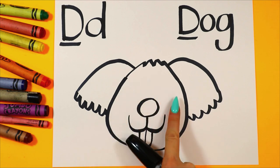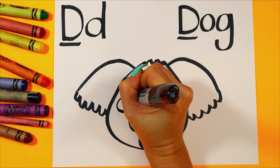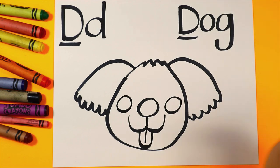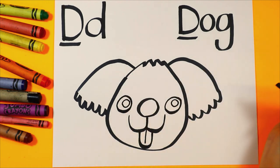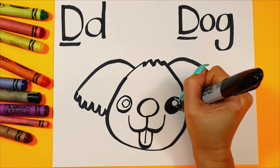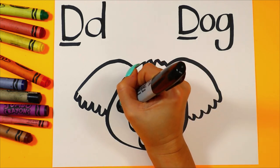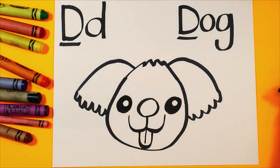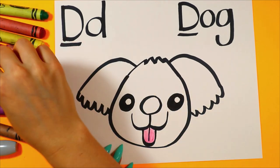On either side of the nose, we're going to draw the dog's eyes. Let's draw a circle on either side of the nose. In each eye, let's draw a smaller circle. Then we can color in the dark of the eye, leaving just that circle white. Once you're done, you're ready to color in your dog. You can pick your favorite art medium and choice of colors to color in your dog.